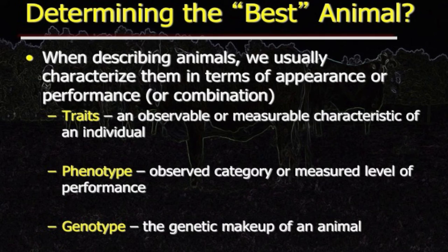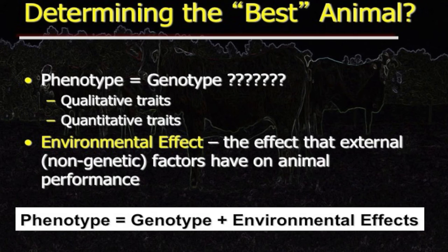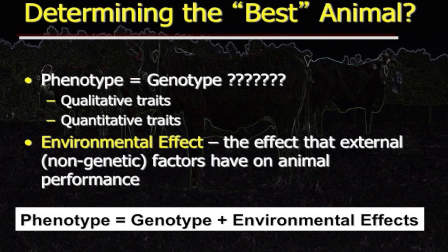Genotype is the genetic makeup of the animal — what the genes tell us about that animal. Does phenotype equal genotype? Not necessarily. We have to consider the environmental effect: we can have genetically the best animal, but if environmental effects are too negative, the animal may not express its best phenotype. Therefore: phenotype equals genotype plus environmental effects.